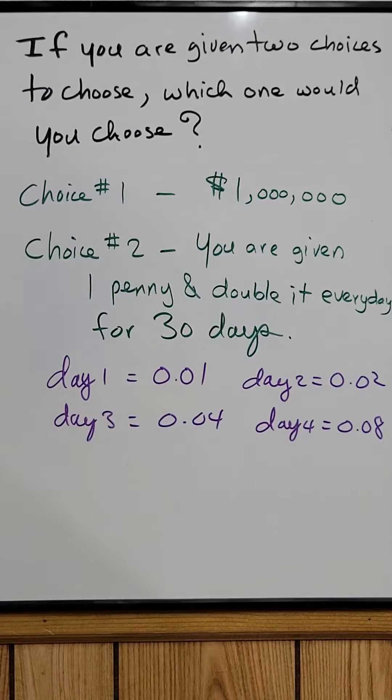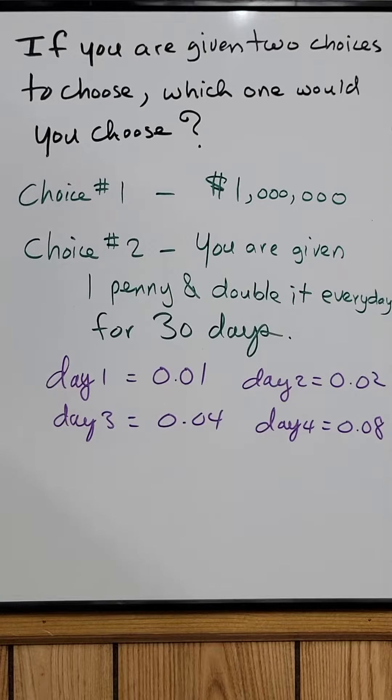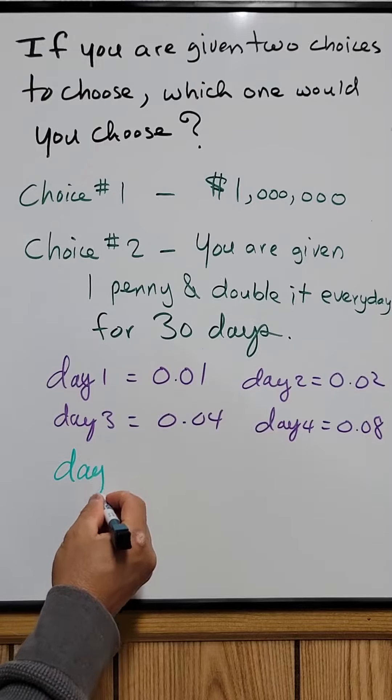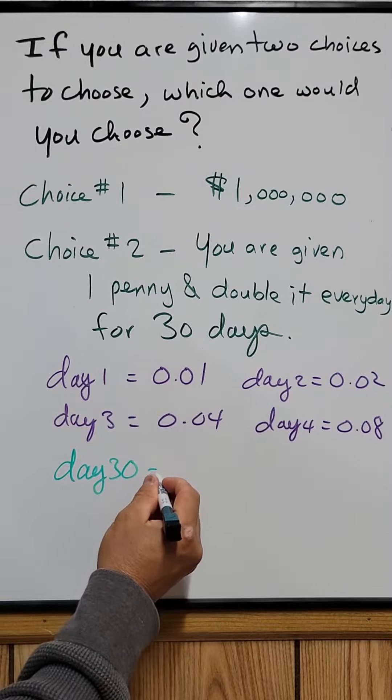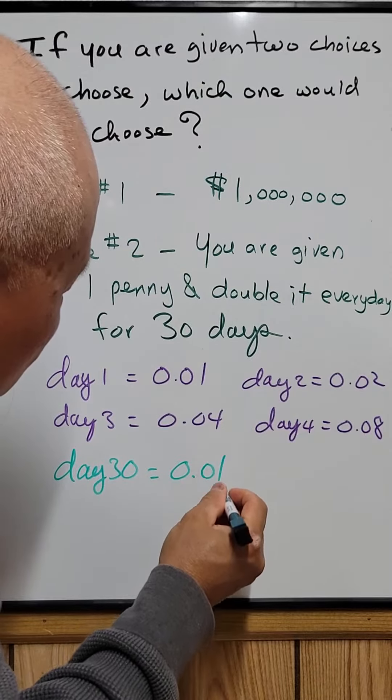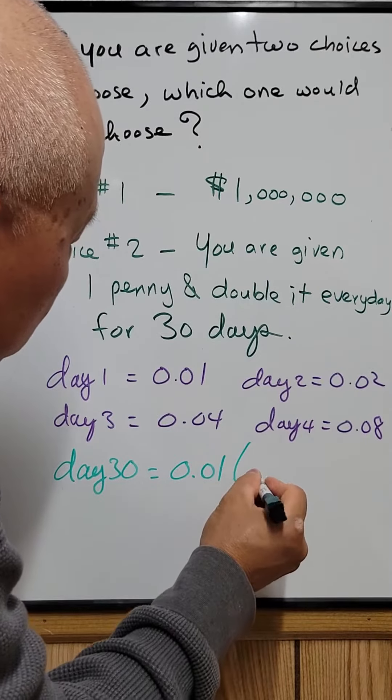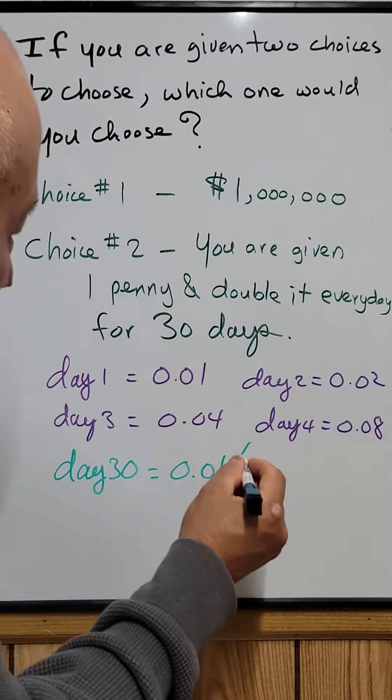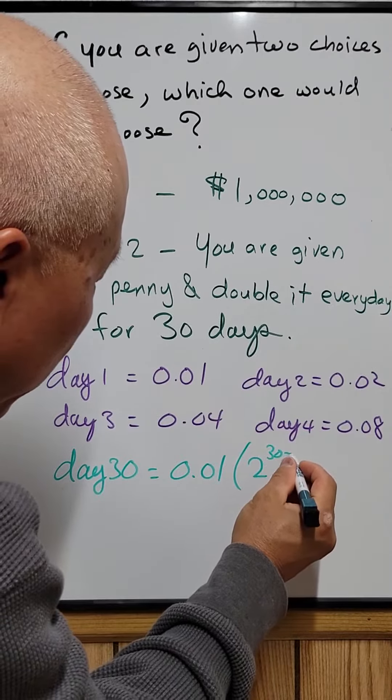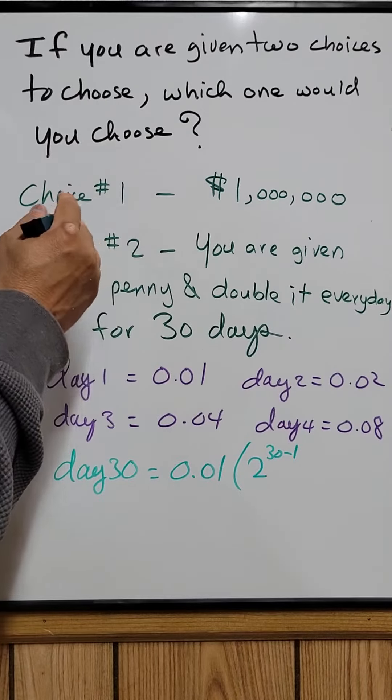So to find day 30, you want to take 0.01 times - since you double every day, it would be 2^30 minus one, because the first day you didn't double it, so you have to minus one.